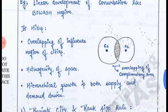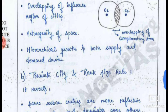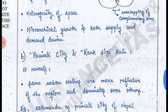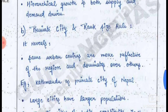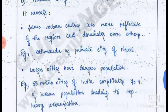However, Central Place Theory hides the development of influence of cities and the heterogeneity of space. As seen here with C1 and C2, complementary areas show hierarchical growth that is both supply and demand driven, from city and rank size rule.